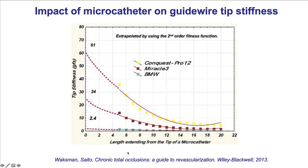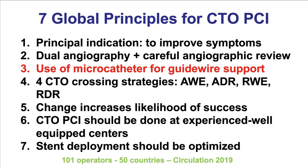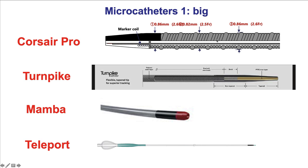Having a microcatheter dramatically alters the penetrating power of a guide wire. Having the guide wire tip extend only a millimeter or two from the tip of the microcatheter significantly increases penetrating power. This explains why wiring through a microcatheter is much more often successful in CTO crossing than wiring with a guide wire alone, and that is why use of a microcatheter is recommended in all CTO-PCI cases — it is one of the seven global principles of CTO-PCI.